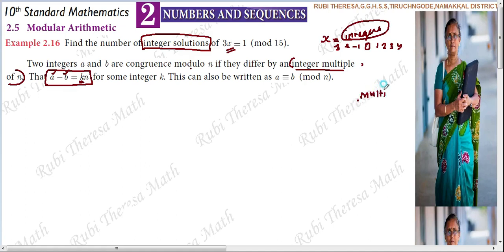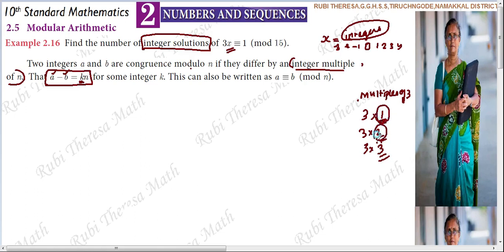For example, choosing multiples of 3. If you choose a multiple of n, it should be an integer. For any integer multiple of n, this can also be written as a is congruent to b mod n.